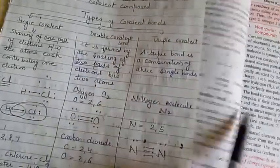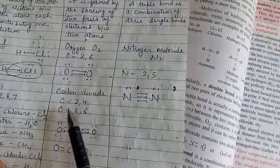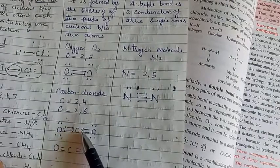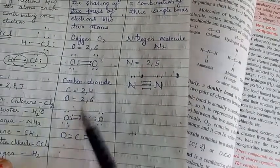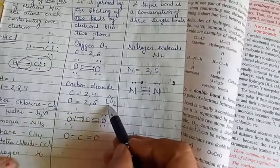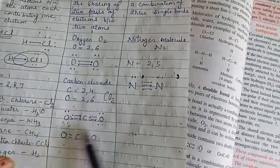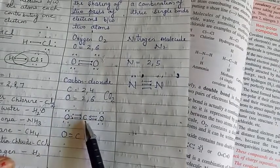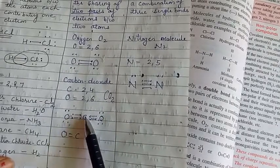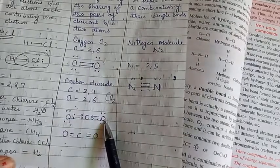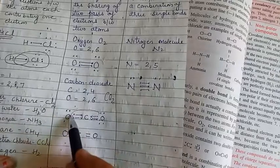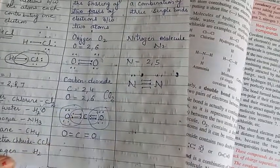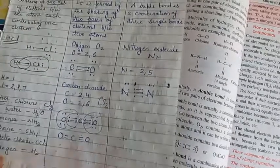Another example is carbon dioxide (CO₂). Carbon has atomic number 6, configuration 2,4, so valence electrons are four — shown here with crosses. Oxygen has six valence electrons. CO₂ has one carbon atom and two oxygen atoms. Both oxygen atoms need two electrons each, and carbon needs four electrons total. Carbon gets two electrons from one oxygen and two from the other, giving carbon eight electrons in its outermost shell. Both oxygen atoms also achieve eight electrons. This is a double covalent bond.